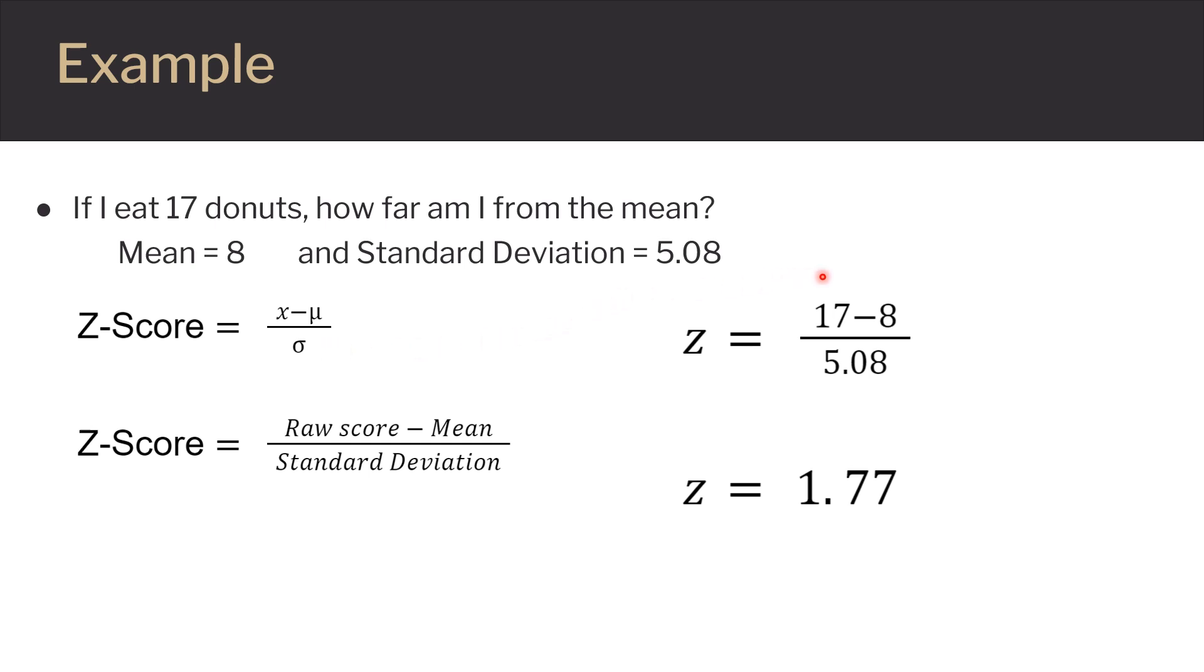So we will plug those values in. Our raw score is 17, because I ate 17 doughnuts, and I am subtracting the mean of 8. Then it is all divided by 5.08. When this is plugged into a calculator, 17 minus 8, then divided by 5.08, the result is 1.77.